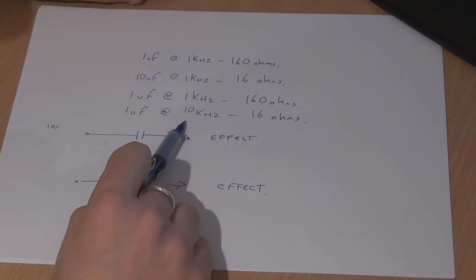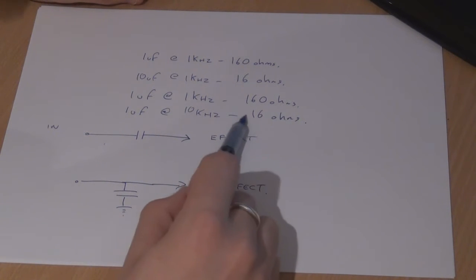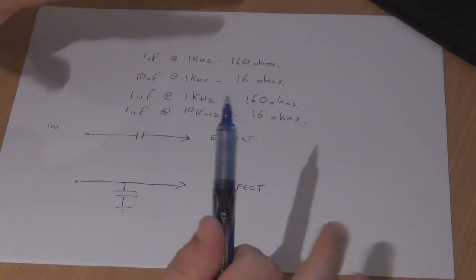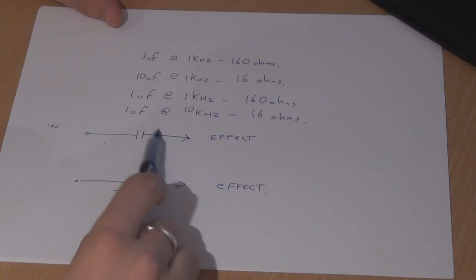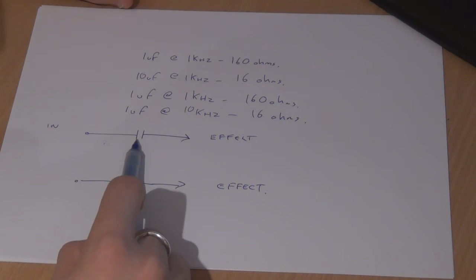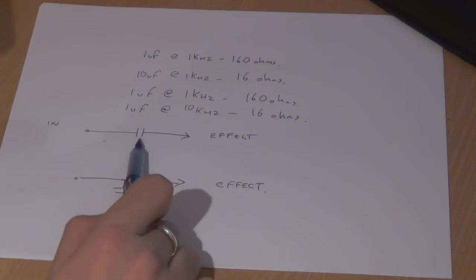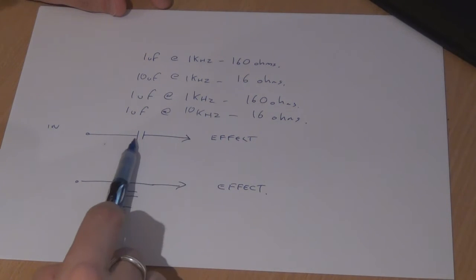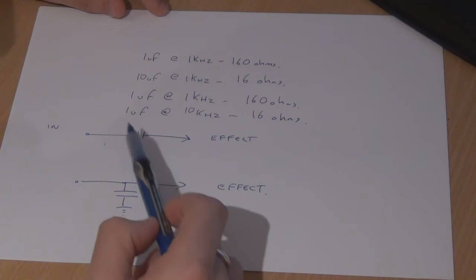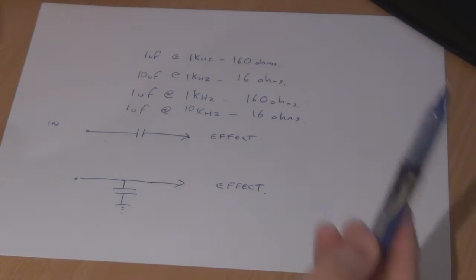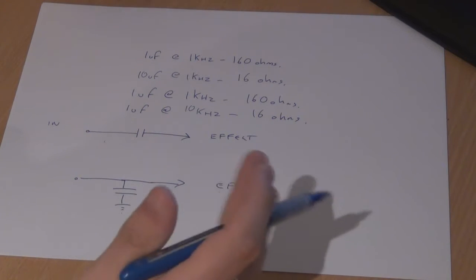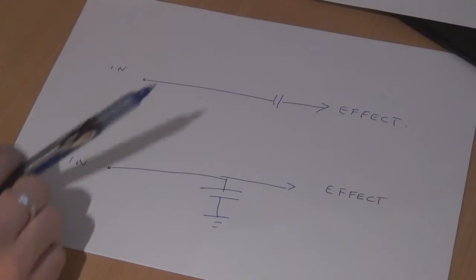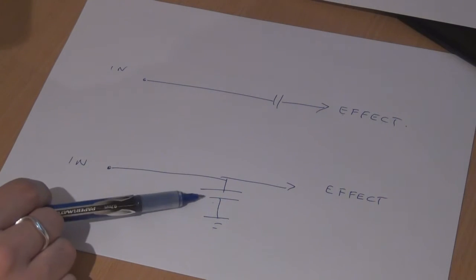As we increase the frequency, the resistance drops. At zero hertz — DC voltage — the capacitor appears as an open circuit, like you've cut a wire; no voltage passes through. But as you slowly increase the frequency, the resistance of the capacitor slowly drops until at a very high frequency the capacitor appears as a short circuit, like a piece of wire.